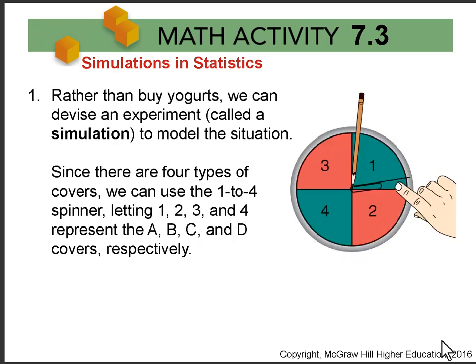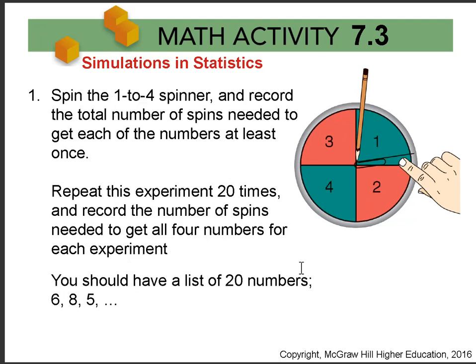In number one, rather than buy yogurt, we're going to do an experiment — a simulation. We'll use our 1 to 4 spinner: 1 equals A, 2 equals B, 3 equals C, and 4 equals D. We'll use this to spin and model buying yogurts. You'll spin the spinner and record the number of times you need to get each number at least once.